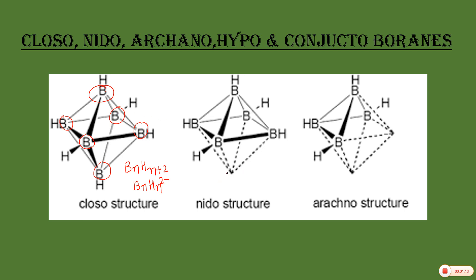In the Nido structure, one of the vertices is missing from the polyhedra. The general formula for Nido structure is BnHn+4, or BnHn⁴⁻. So this is the Nido structure in which one vertex is missing.